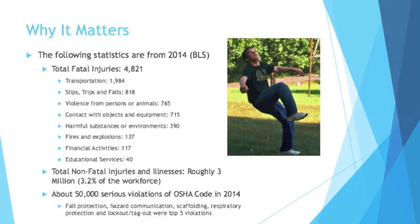In 2014, there were 50,000 serious violations of OSHA code. The top five offenders were: fall protection, hazard communication, scaffolding, respiratory protection, and lockout/tagout. So people are dying every year at their jobs, millions of people are getting injured, and serious violations are very plentiful. So it is important to have some sort of agency that will help protect you.